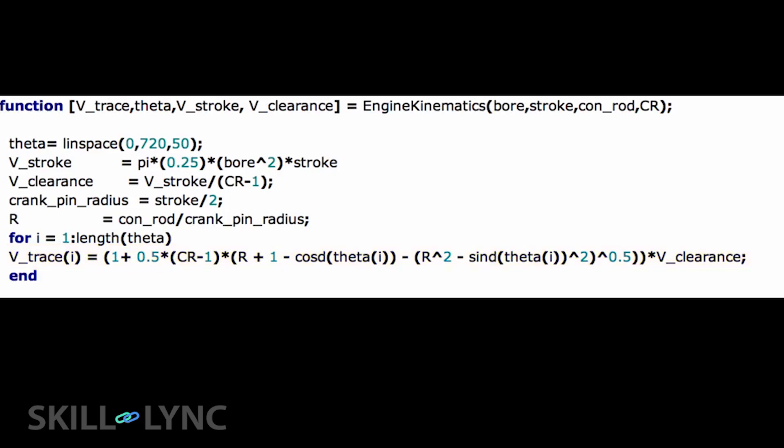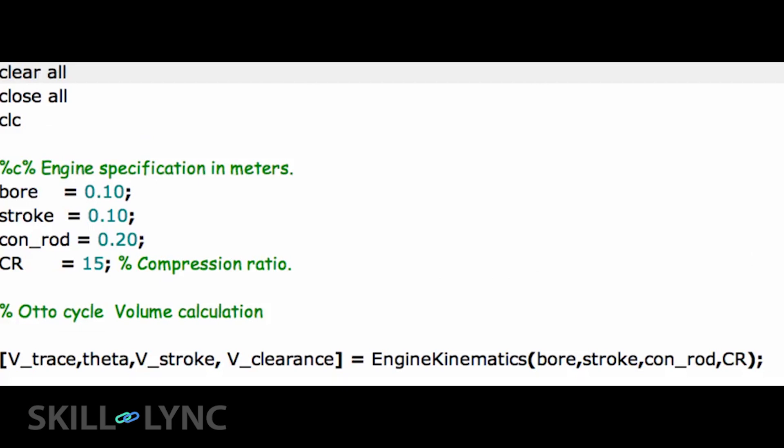We use a for loop to accomplish this. Now let us take a look at the main program coding. The main program is very simple. We define the geometric parameters and then supply them to the function that we have written.